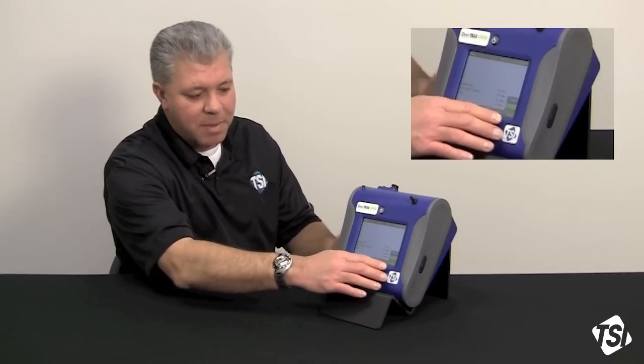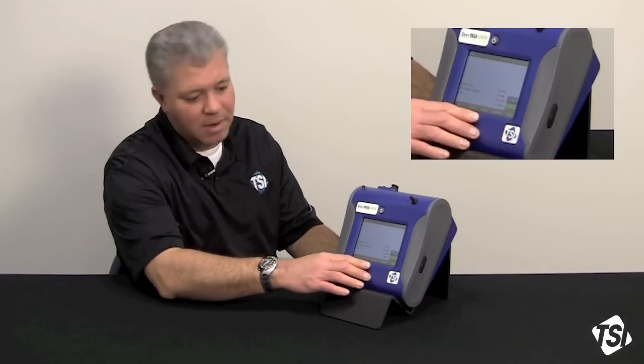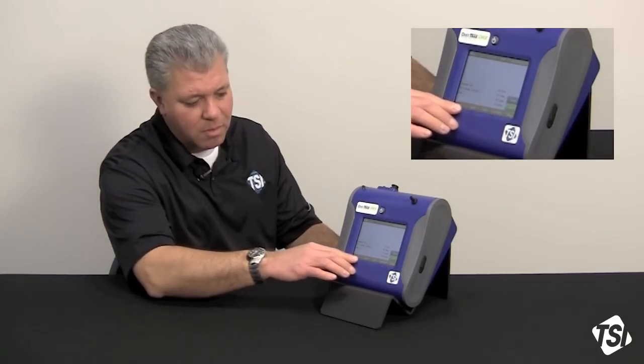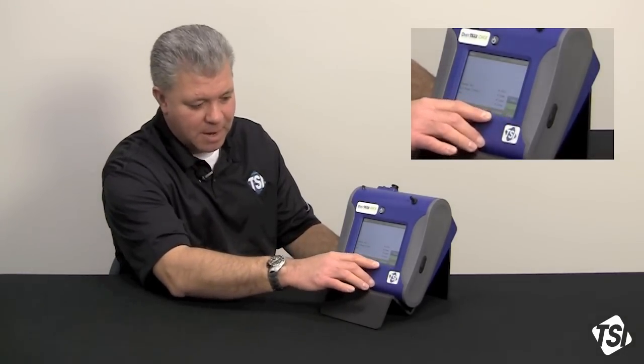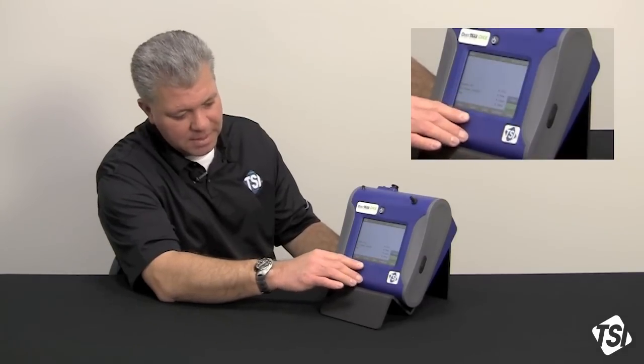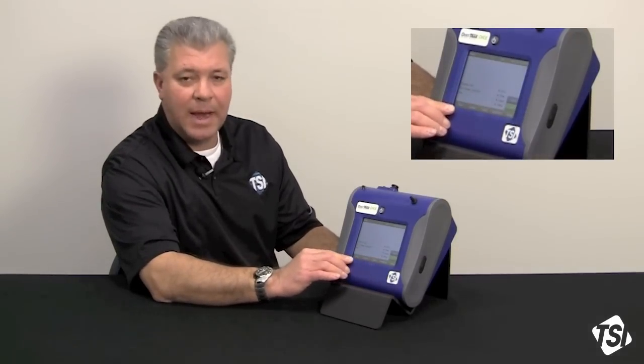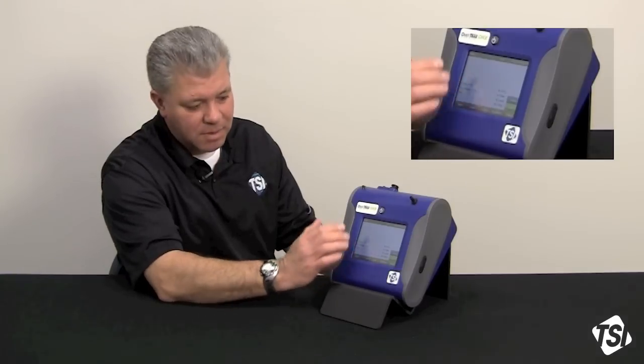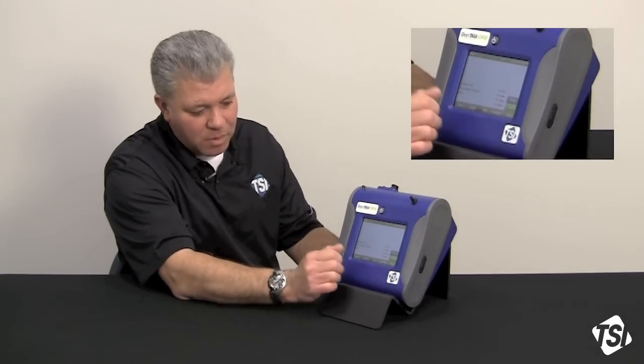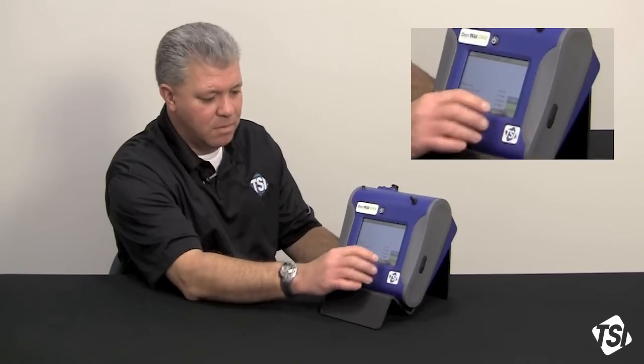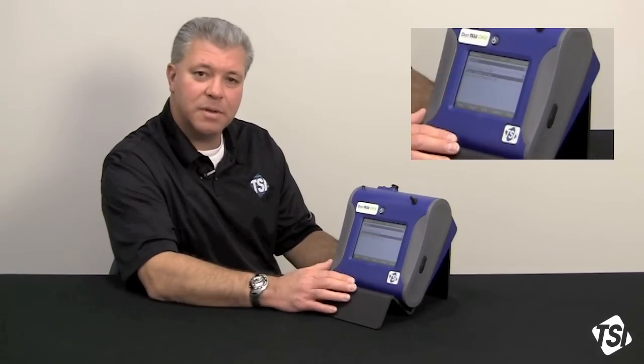Now, across the bottom of a DustTrak 2 or DRX, you have a row of function tabs. You've got the setup tab, the run mode tab, the data tab, the graph tab, and a main tab. We're in the main screen right now, which was actuated by the main tab. What we're going to do is go over to the run mode tab, and I'm going to select that.